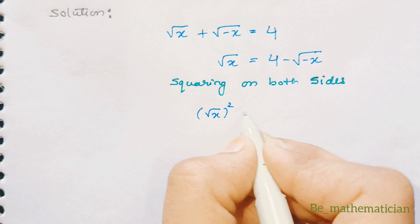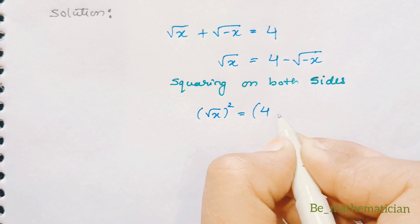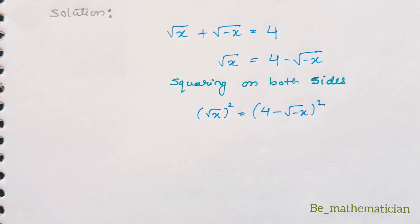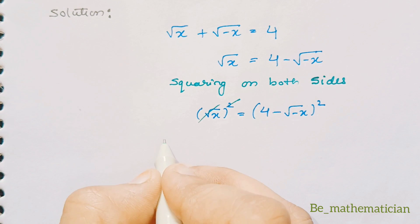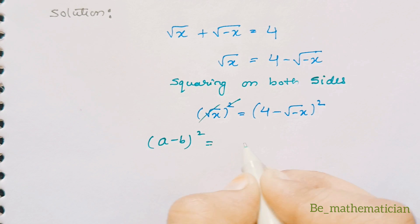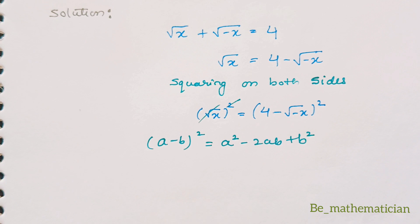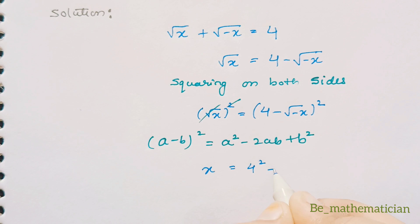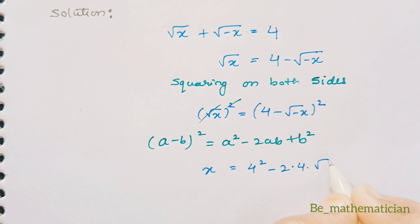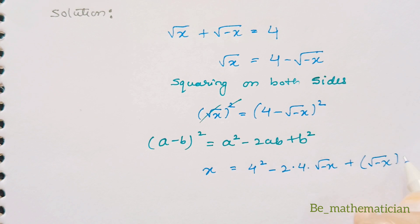(√x)² = (4 - √(-x))². The square and square root get cancelled on the left side. On the right side it is in the form of (a - b)² = a² - 2ab + b², so our equation becomes: x = 4² - 2·4·√(-x) + (√(-x))².